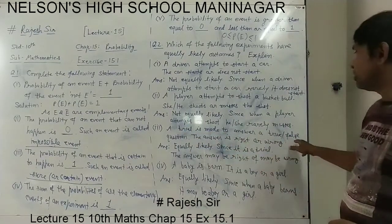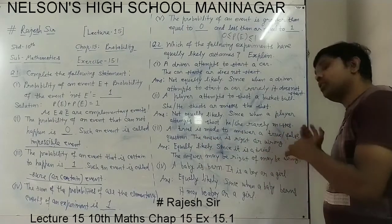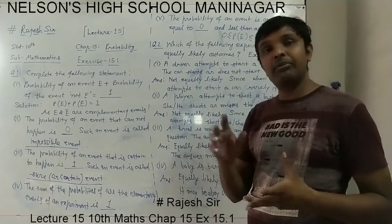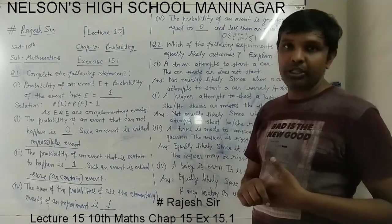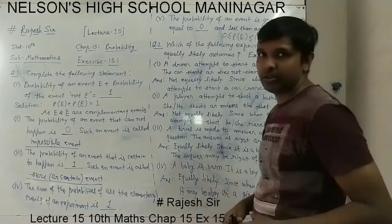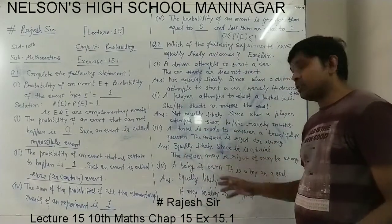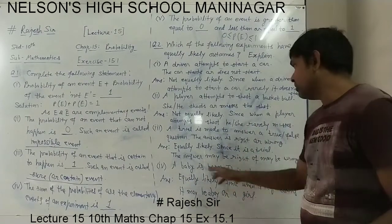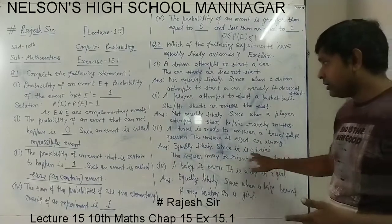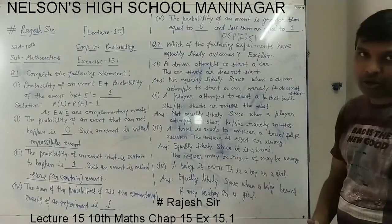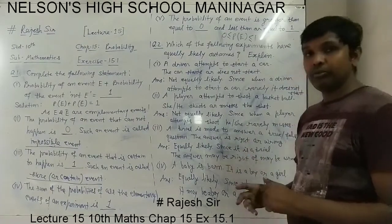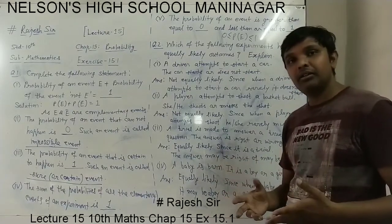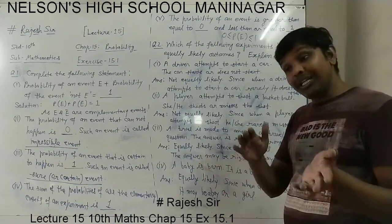Third: a trial is made to answer a true-false question — the answer is right or wrong. We are randomly saying true or false because it is a trial. So it is equally likely, because there is no reason behind the answer — you just have to say true or false. So equally likely: the answer may be right or wrong — 50% it will be right, 50% it will be wrong.